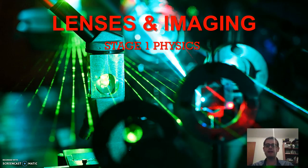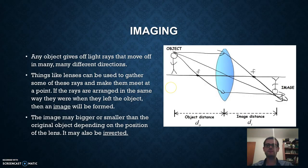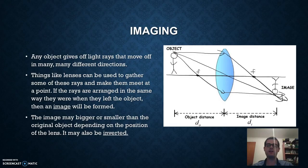This video looks at lenses and how we can use them to form images. Any object will have a whole bunch of light rays coming off it, moving in thousands of different directions. If we have a lens, we can gather up some of those light rays and make them meet at a point, arranged in the same way they were when they left the object, forming an image at that point.